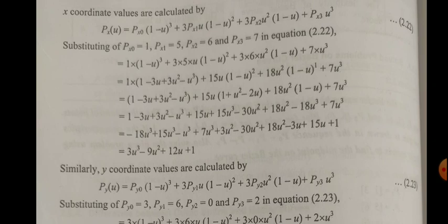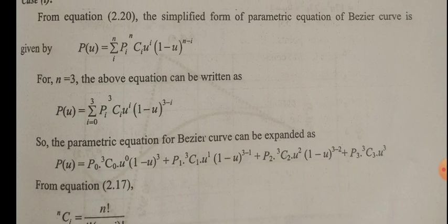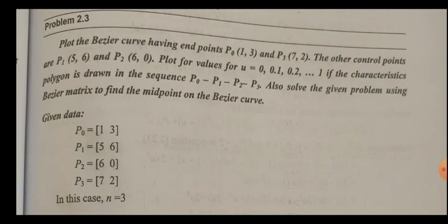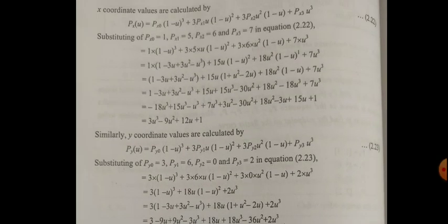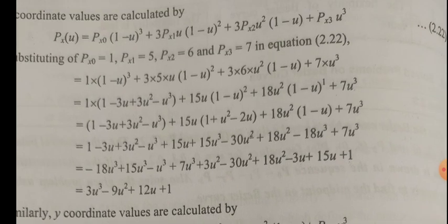The coordinate values are: x values 1, 5, 6, 7 — so the first point is (1, 3) and the last point is (7, 2). We will substitute these values and find the equation.